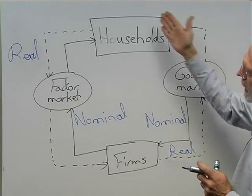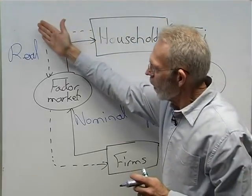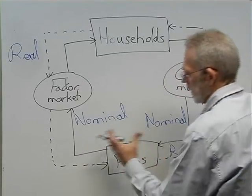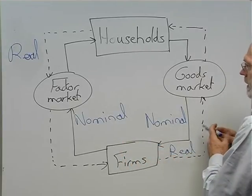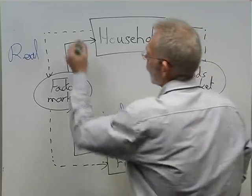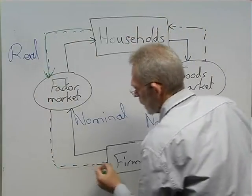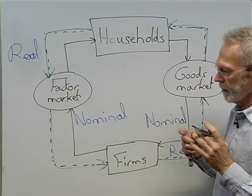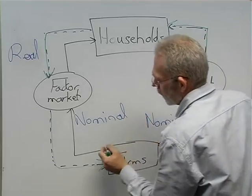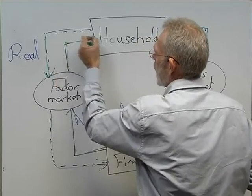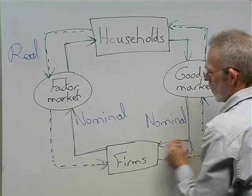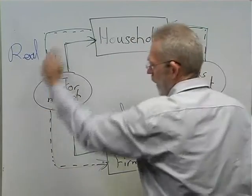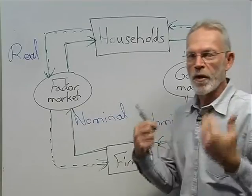What can we see now? There's a real flow from households to firms. Firms use the factors of production — that real flow — and they produce goods and services. So we have a real flow from households to firms and back to households. At the same time, there's a nominal flow from firms to households and back to firms. You can also notice that these two flows — the real flow and the nominal flow — are in opposite directions.